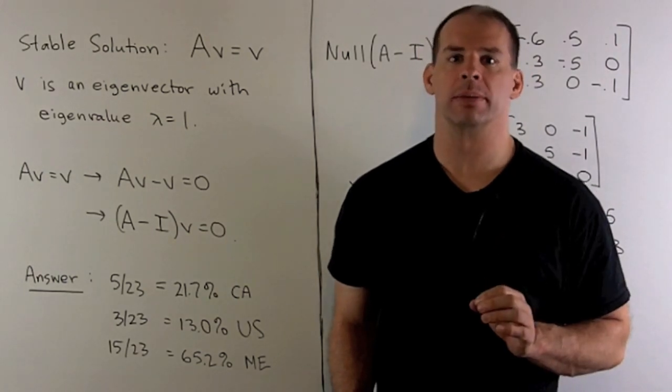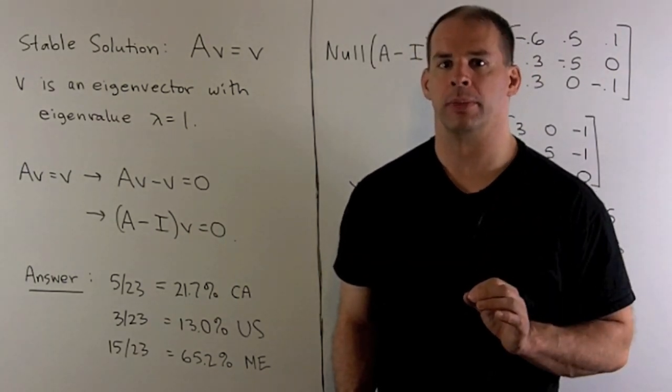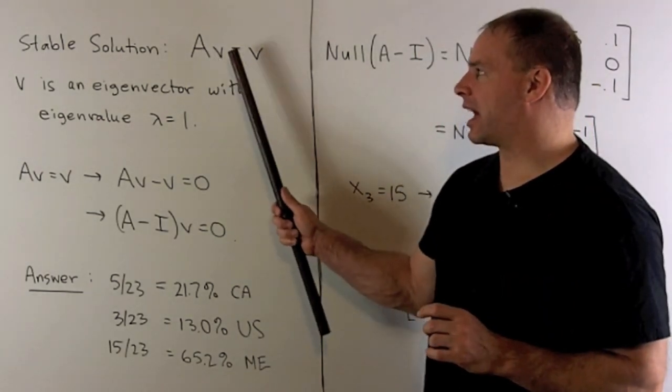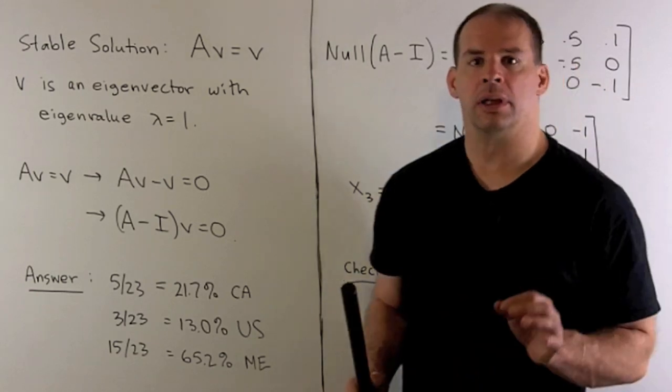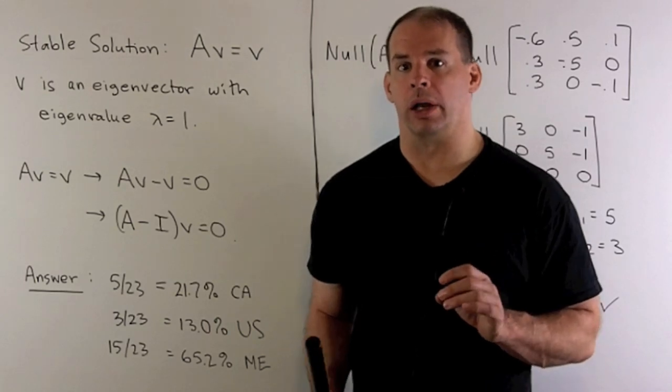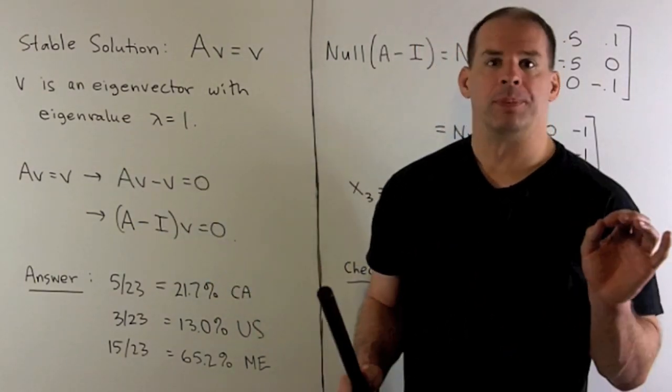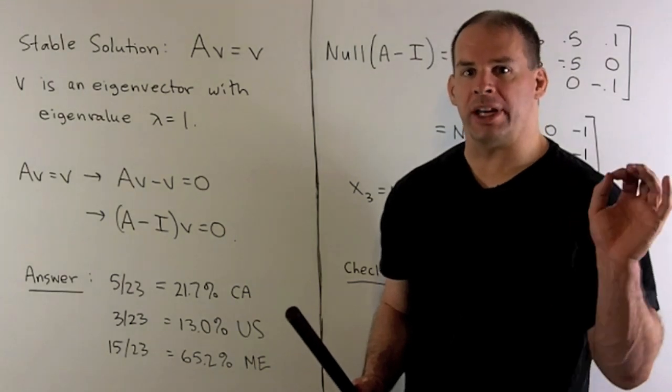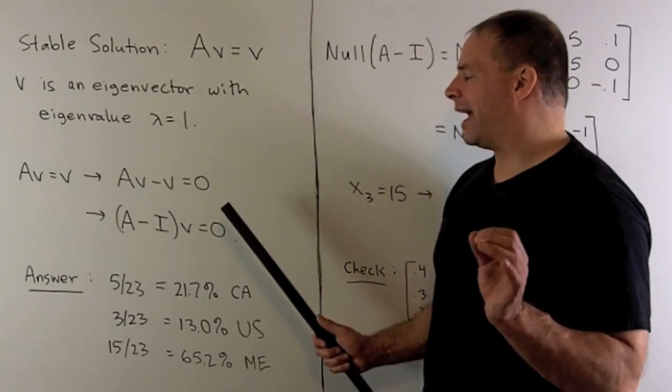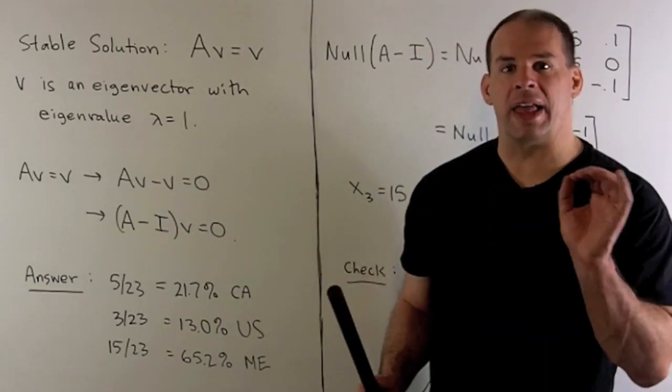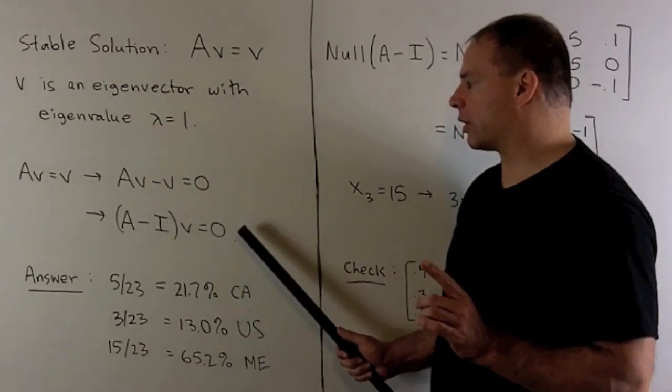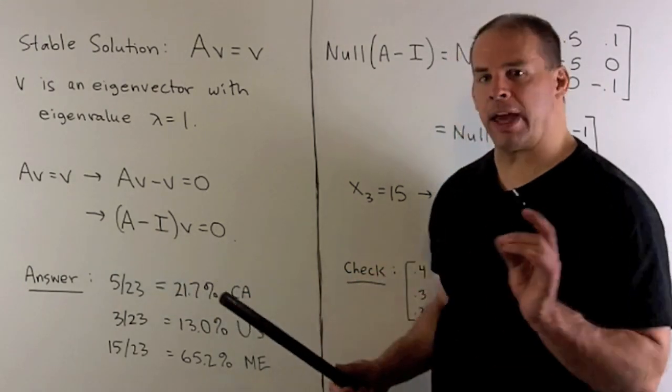Now that we have our transition matrix, we can look for a stable solution. Here, we're looking for a non-zero vector V such that A times V gives us V back. That means V is going to be an eigenvector for A with eigenvalue equal to 1. To solve this, we just take the equation AV equals V. I move the V to the other side, so we have AV minus V equals 0. If I want to factor a matrix out of the V, we just pull out the identity matrix. We're trying to solve A minus I times V equals 0. I'm just trying to find the null space of A minus I.